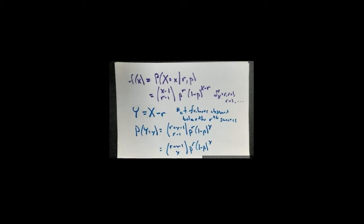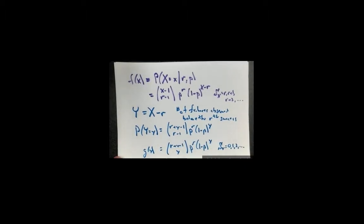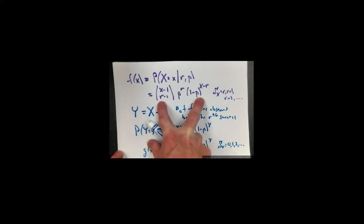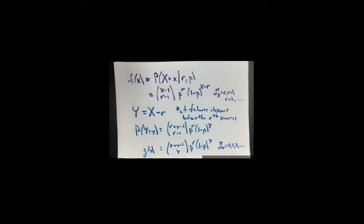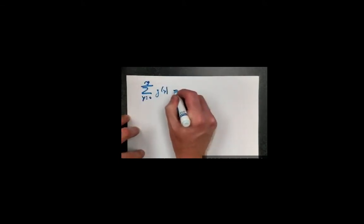The reason I want to use this notation is it allows an immediate transformation: using the symmetry of the binomial coefficient, r minus 1 plus y choose r minus 1 is the same thing as r plus y minus 1 choose y. One feature we want to take advantage of is that whether we write it as f(x) or g(y), we know this is a PMF, which means if I sum over all values in the support — for Y the support is 0, 1, 2, et cetera — all of these g(y) values add up to 1.